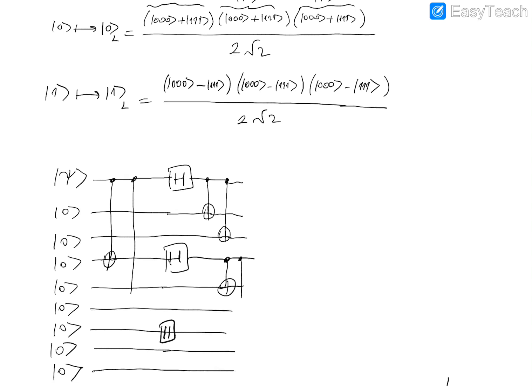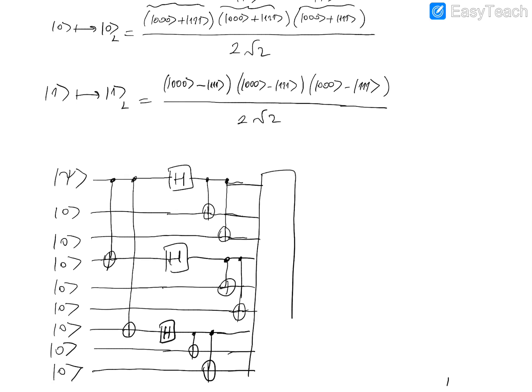There should be another Hadamard transform here. The bit flip code for the second block should look like this — the CNOT transformation goes here, and another CNOT here — taking the seventh qubit as a control qubit and applying the CNOT transformation on the eighth and ninth qubits. This completes the encoding procedure, and then we have the error block, whatever the error is.